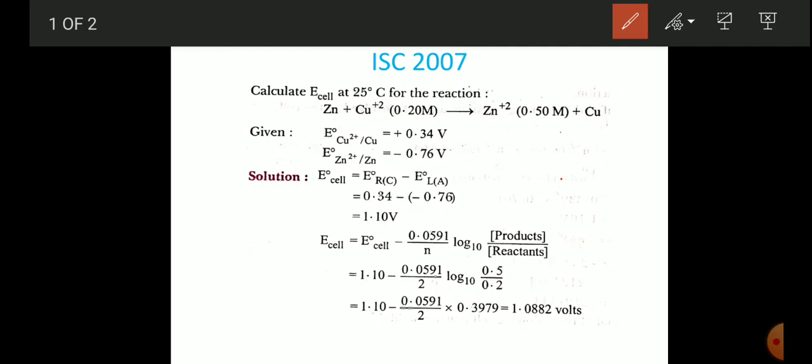Calculate e_cell at 25 degrees Celsius for the given reaction. The reduction potentials are given for copper and zinc: these are the two values 0.34 V and -0.76 V.